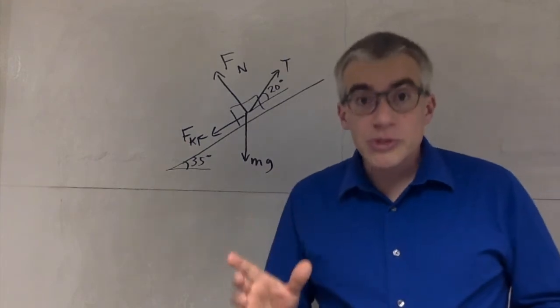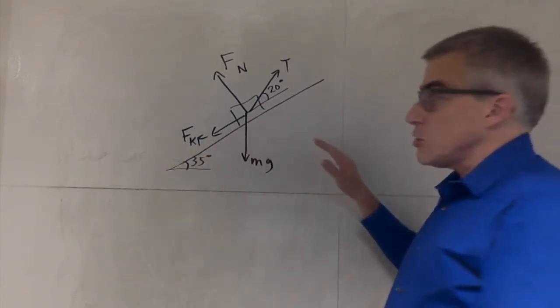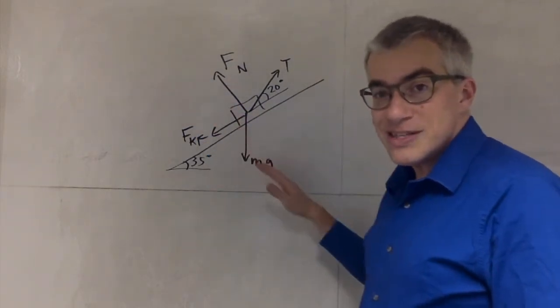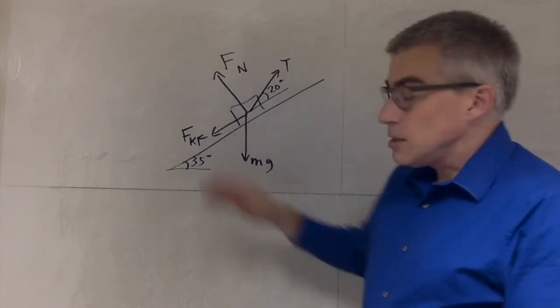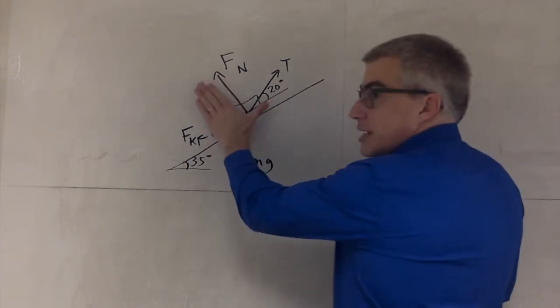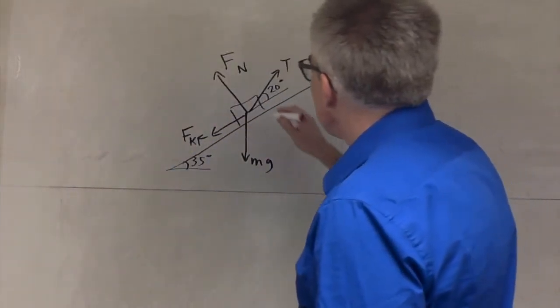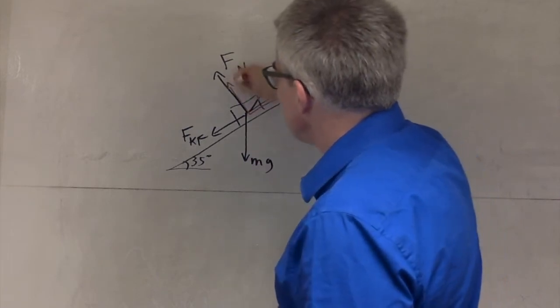Well first you have to choose your coordinate system. Now since we do not expect the block to go leaping into the air or smashing through the wedge, we're pretty sure the acceleration this way is going to be zero. So we might as well make that one of our axes. So we can tilt our axes and have this be positive x and this be positive y.